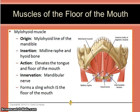The mylohyoid is innervated by the mandibular nerve. This illustrates an inferior view of the mylohyoid, which also shows the digastric muscle, a muscle of the neck, and the hyoid bone.